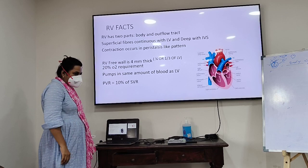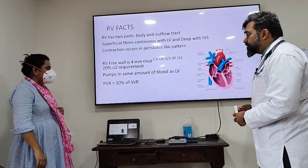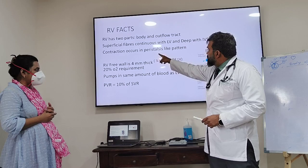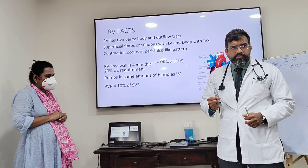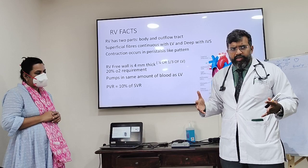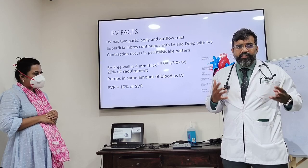Why is this slide so important? Contraction occurs in a peristalsis-like manner — it's a bellows mechanism, a squeezing mechanism in the left ventricle, whereas here it's a bellows. It's not an extremely good contractile segment; it's different from the LV. So it's important to understand that the RV will not contract just like the LV.